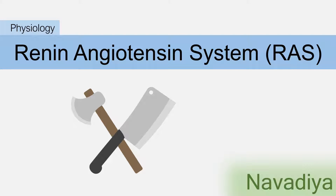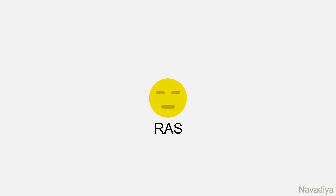Hey guys, in this video we are going to see a very interesting topic: the renin angiotensin system, or renin angiotensin aldosterone system — it's the same thing. So let's start.